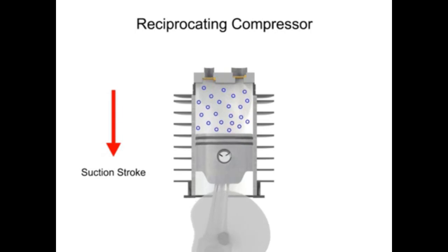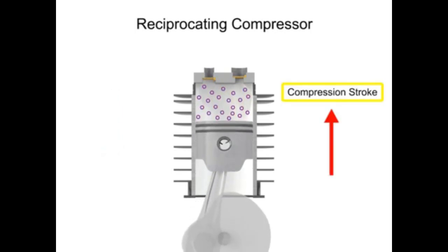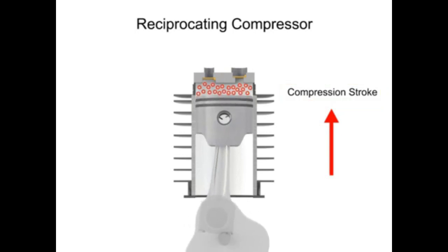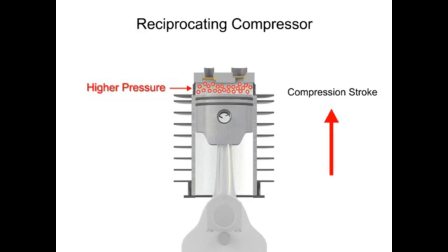As the piston begins its upward compression stroke, the volume within the cylinder decreases. The decrease in volume causes the pressure within the cylinder to increase. The increase in pressure opens the outlet valve and compressed air discharges from the cylinder.